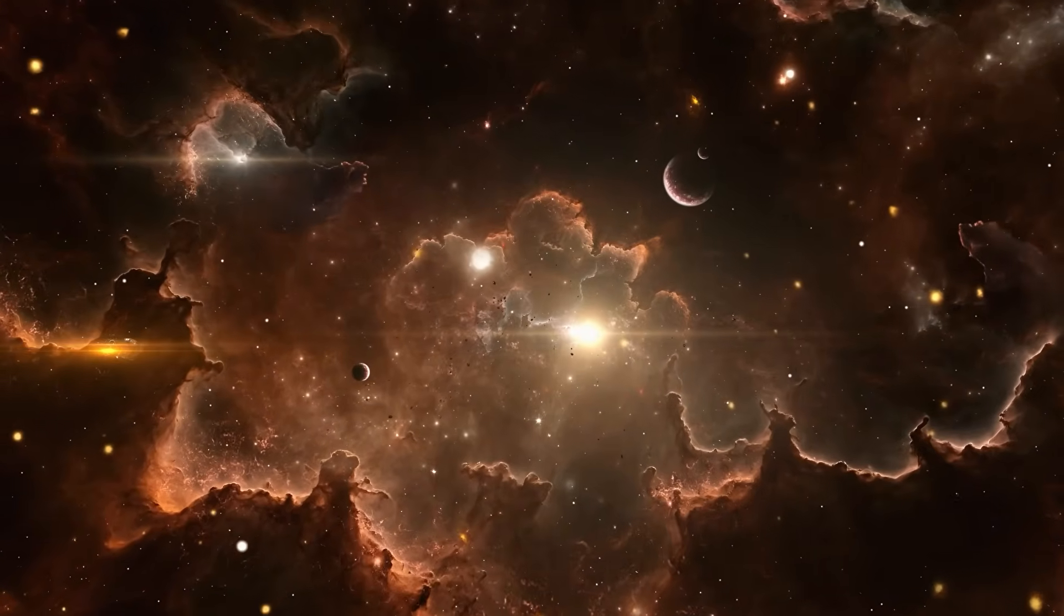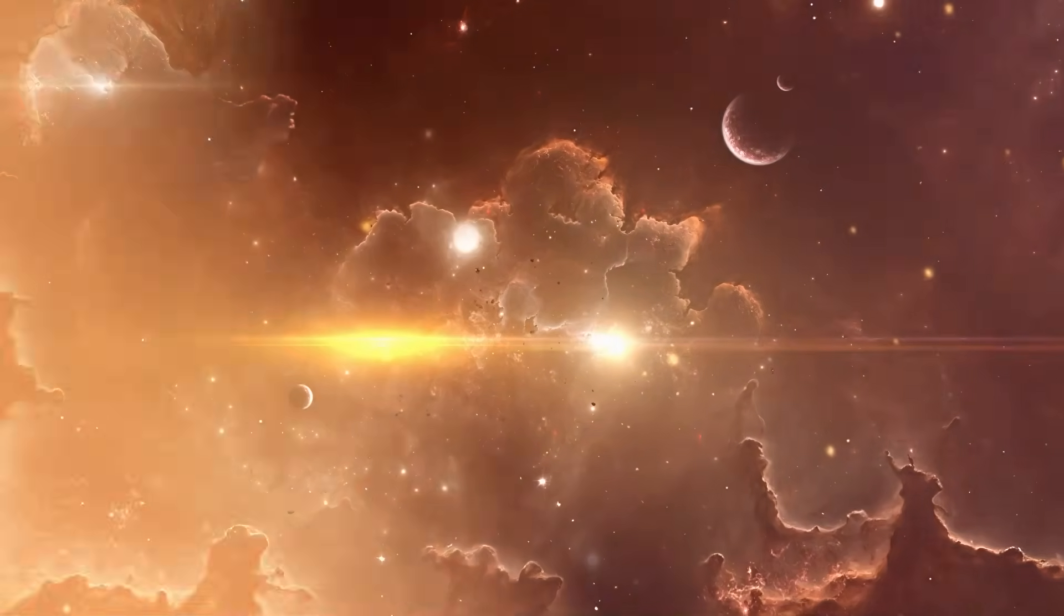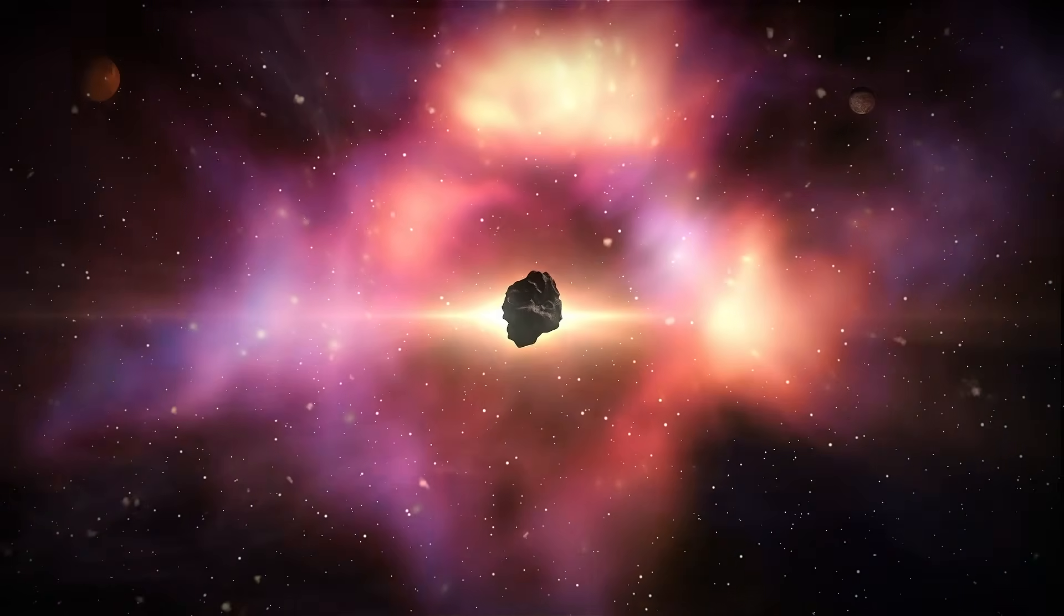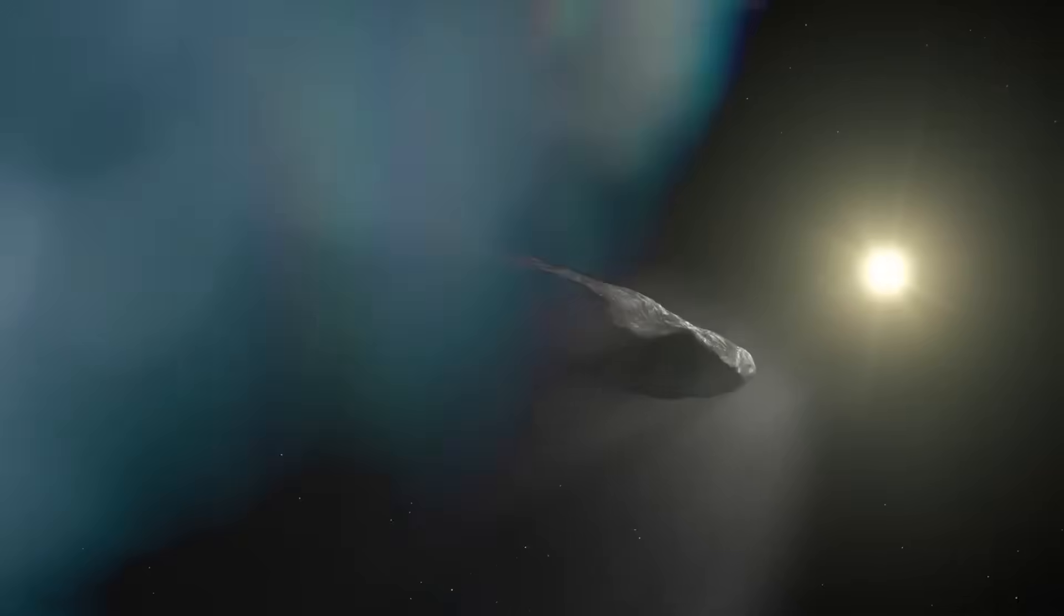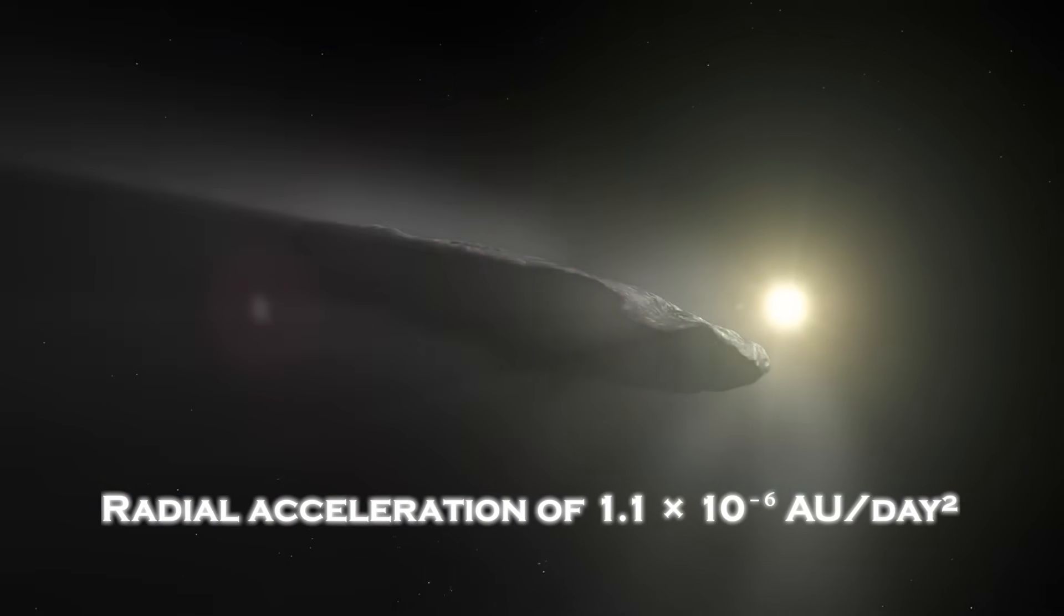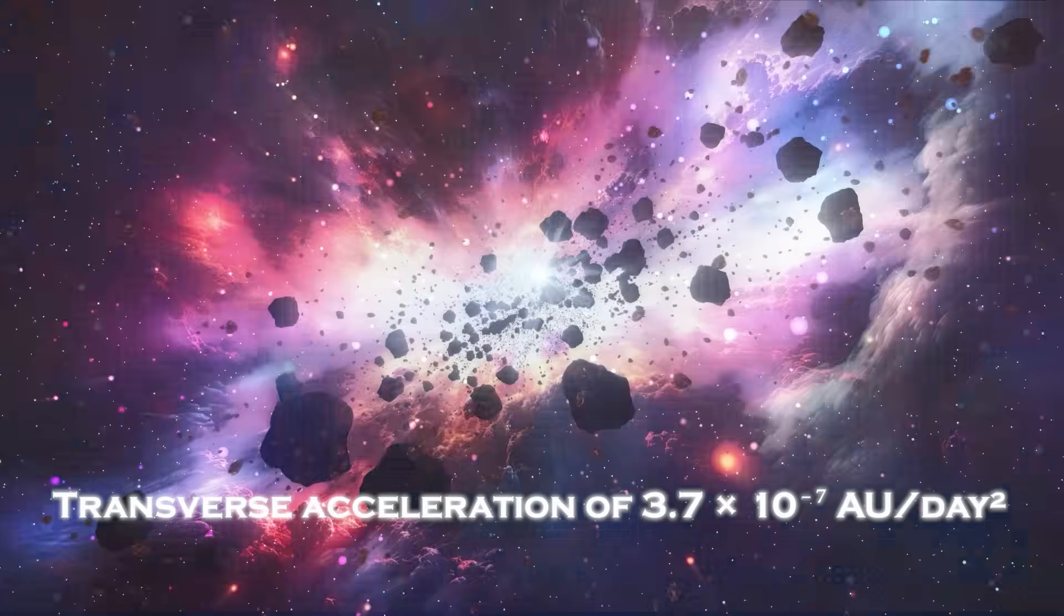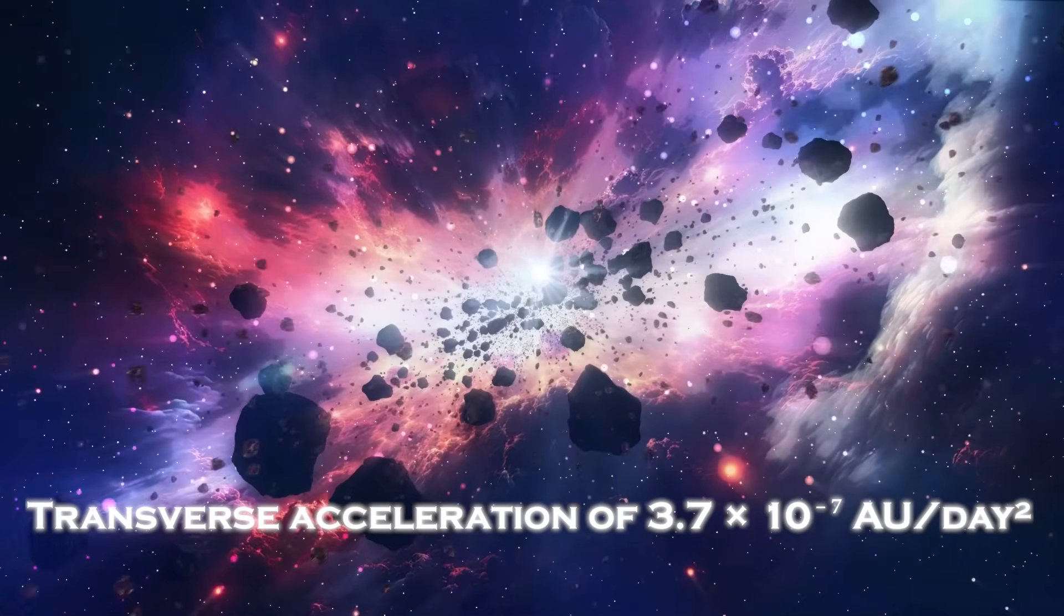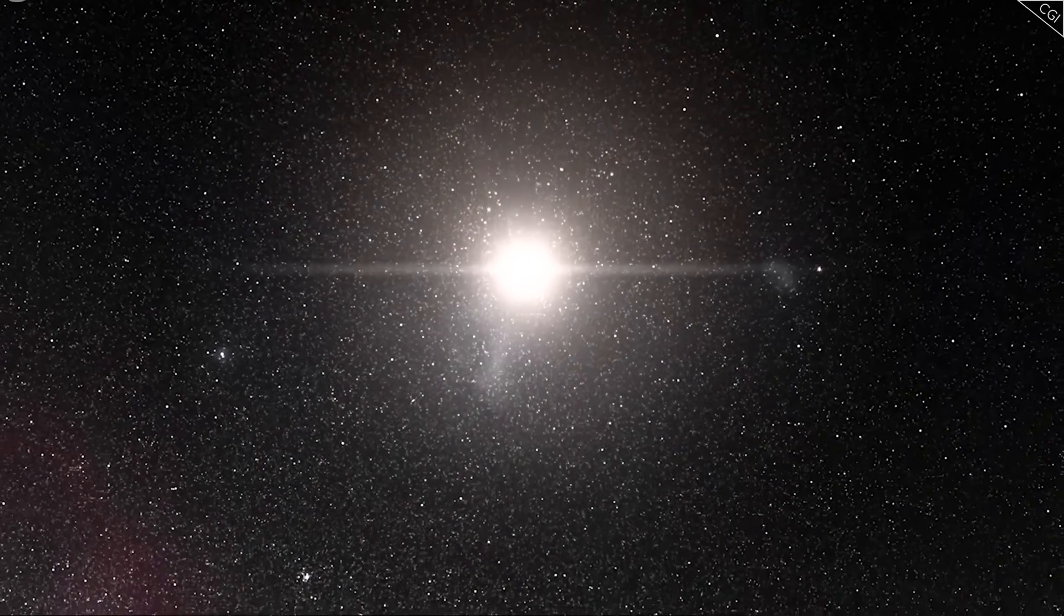As Atlas nears perihelion, astronomers start noticing something deeply unsettling. The comet isn't slowing down under the Sun's gravity. It's speeding up. The Harvard-tracked numbers show a radial acceleration of 1.1 times 10 to the negative 6th astronomical units per day squared, and a transverse acceleration of 3.7 times 10 to the negative 7th astronomical units per day squared.